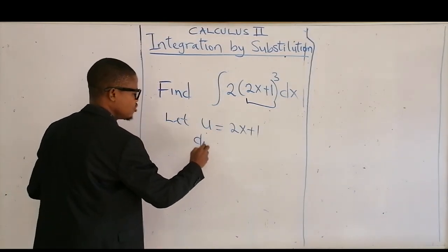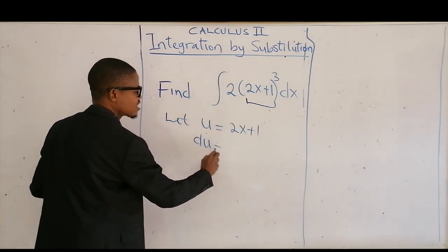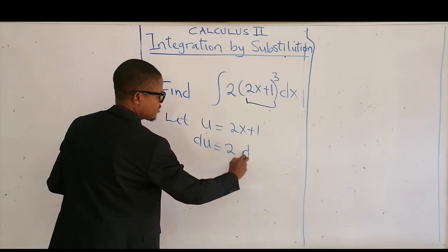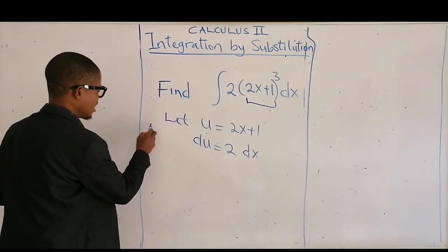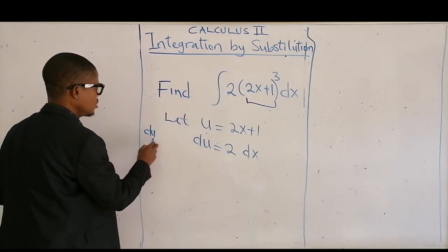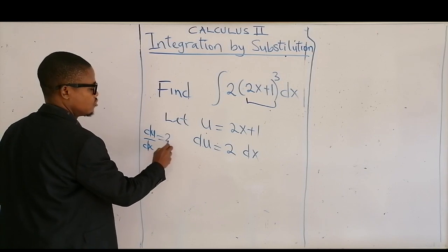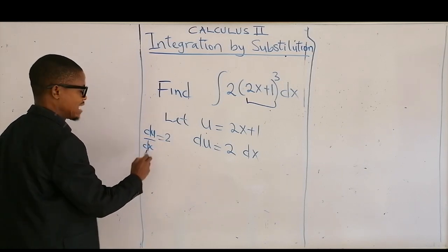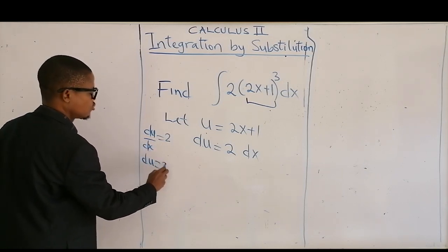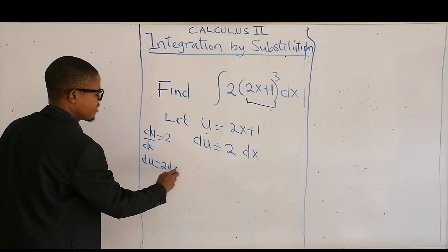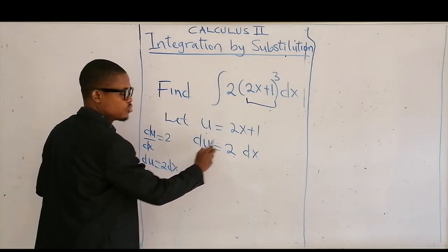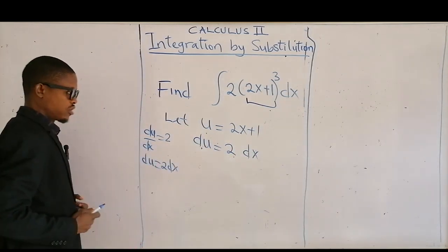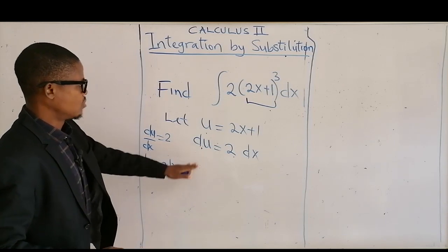Then differentiate your u with respect to x dx. So what this means is du/dx is equal to 2. Therefore du is equal to 2 dx. I will be using du/dx in my u-substitution. So that's all we have now.